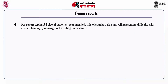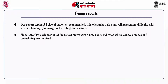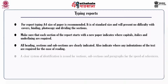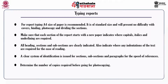Typing the report: A4 size paper is recommended as it is of standard size and will present no difficulty with covers, binding, photocopying and dividing sections. Each section of the report should start on a new page, with clear indication of where capitals, italics and underlining are required. All headings, sections and subsections should be clearly indicated. Indicate where any indentations are required for ease of reading. A clear system of identification should be used for sections, subsections and paragraphs for speed of reference. Determine the number of copies required before photocopying.